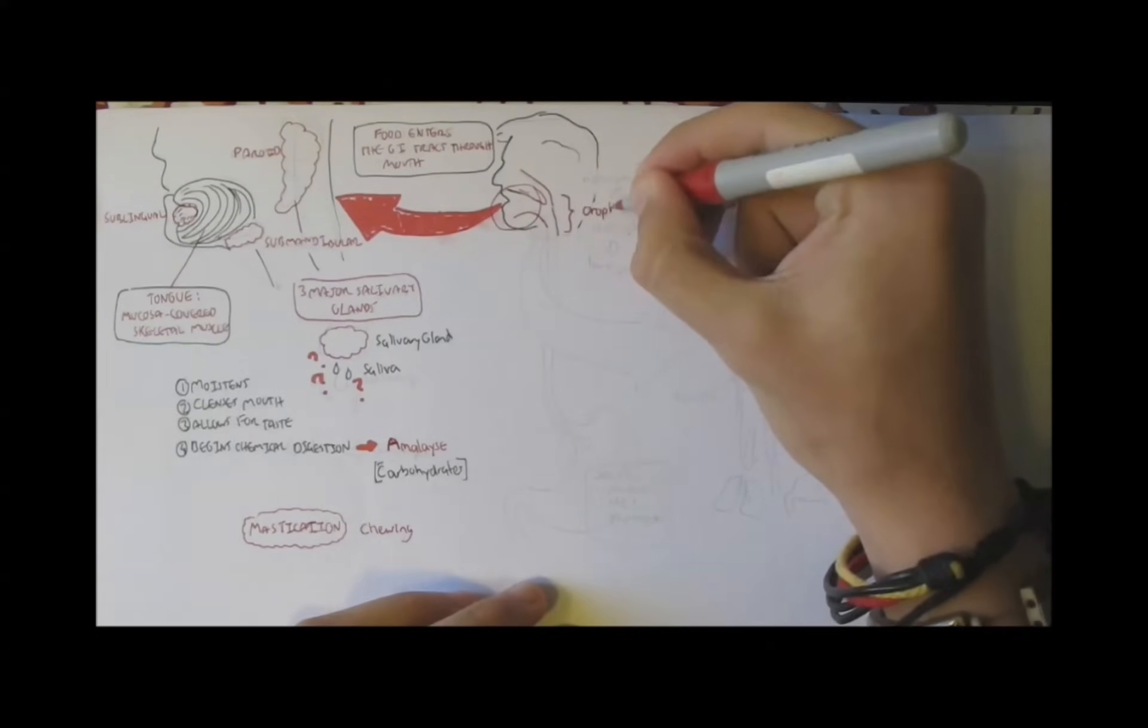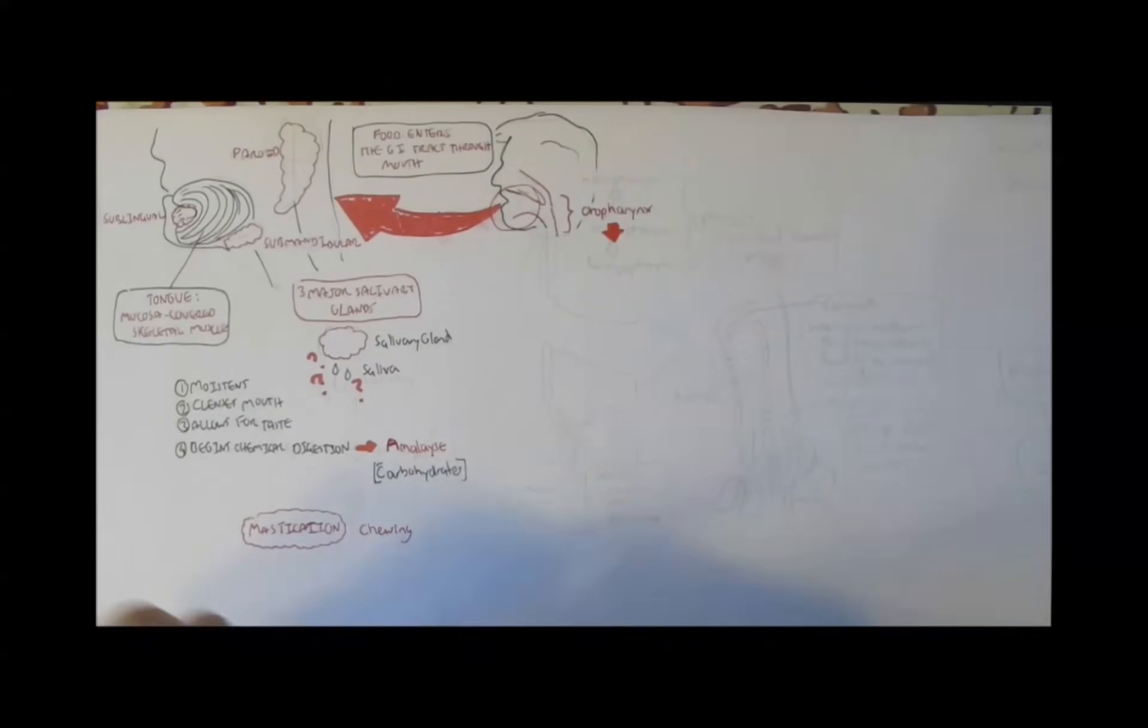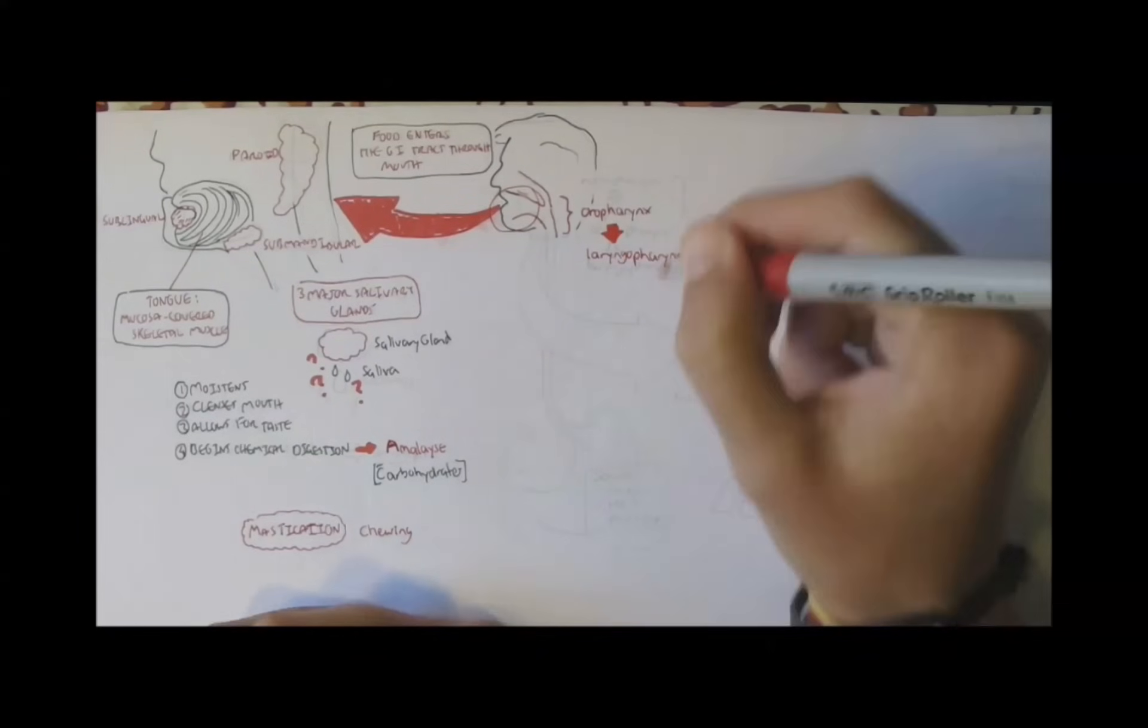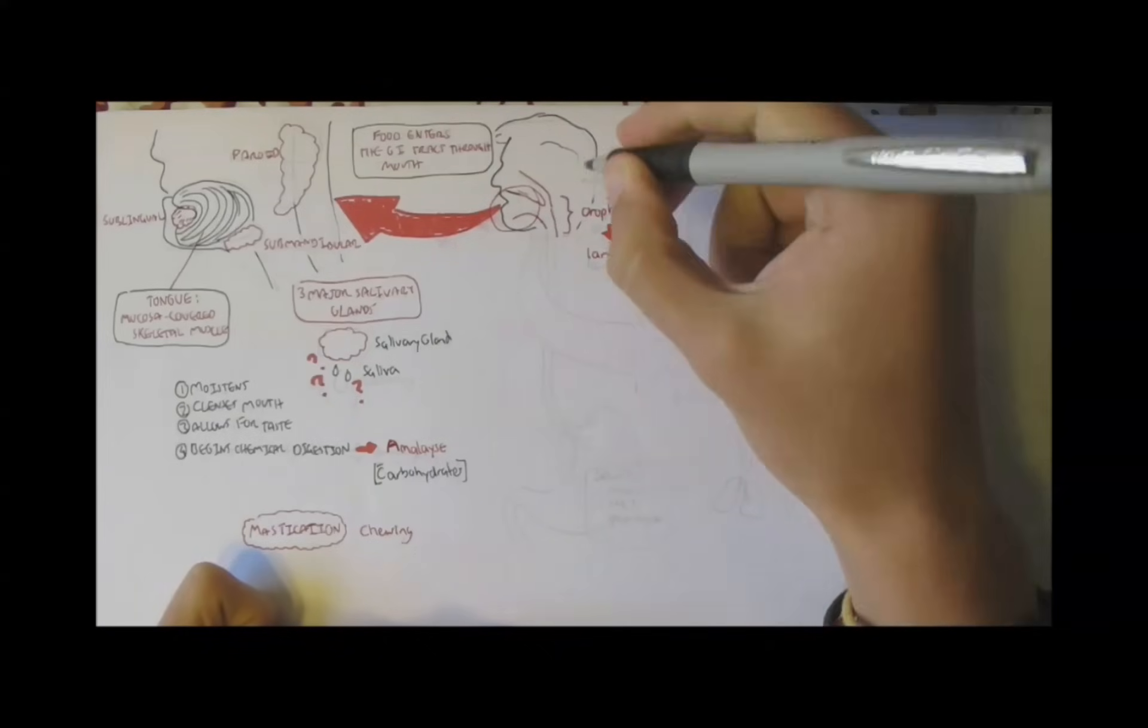So food will then travel from the oral cavity area towards the oropharynx. Oro means oral, as in mouth, and pharynx is the pharynx region. The oropharynx leads to the laryngopharynx, because it's the larynx and the pharynx. So surprisingly, above the oropharynx, we have the nasopharynx. Naso as a nose.